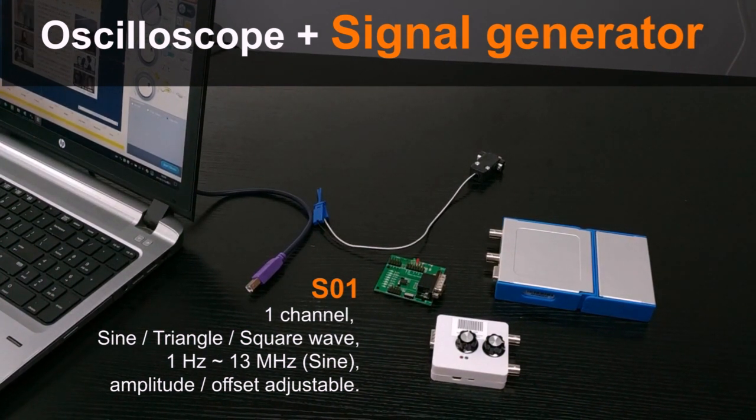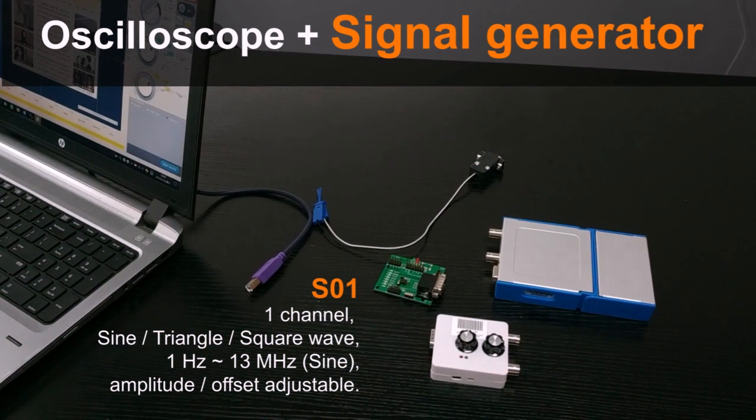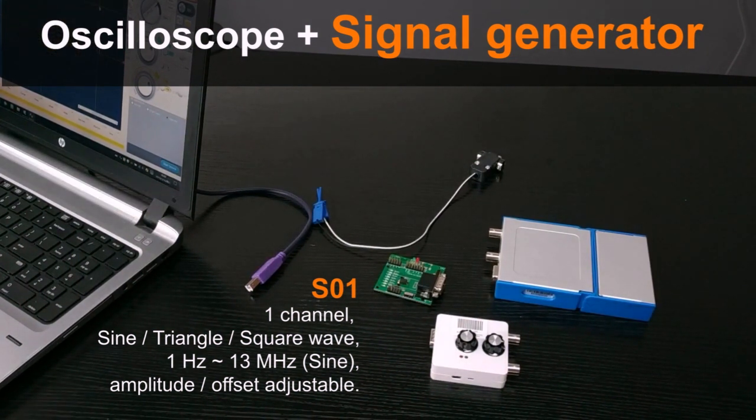When we mount it, it is possible to have a quite compact device, which is an oscilloscope plus a signal generator.